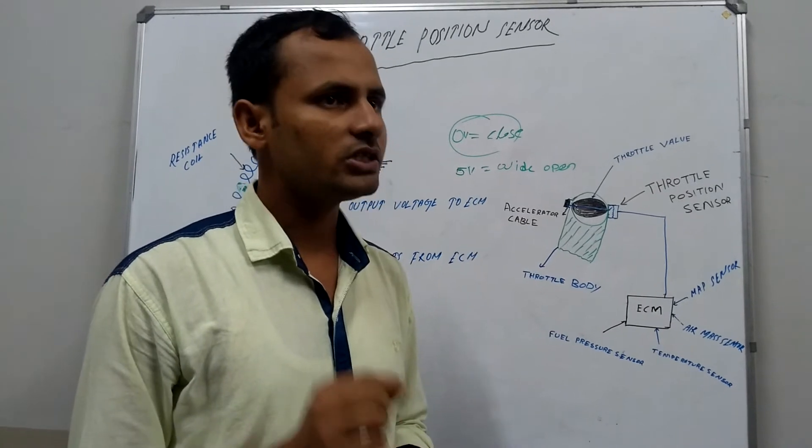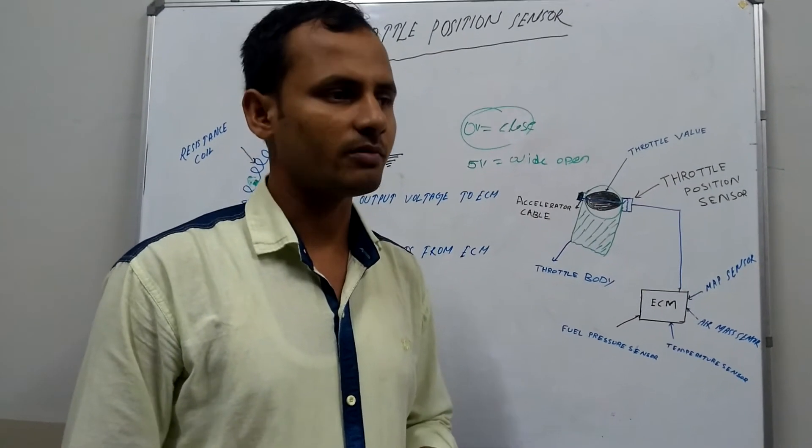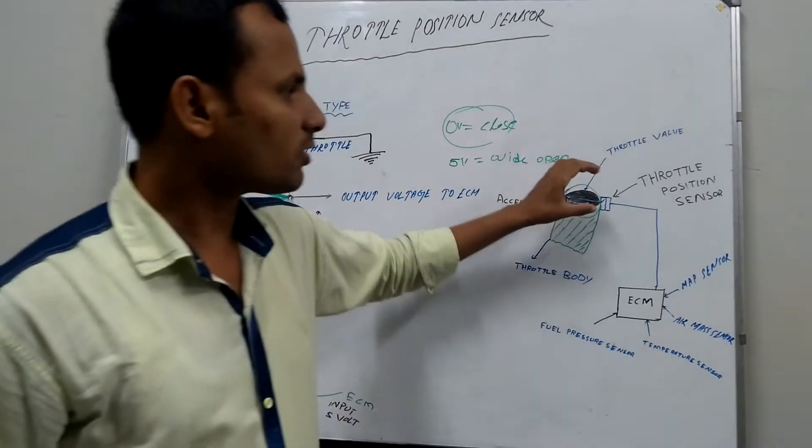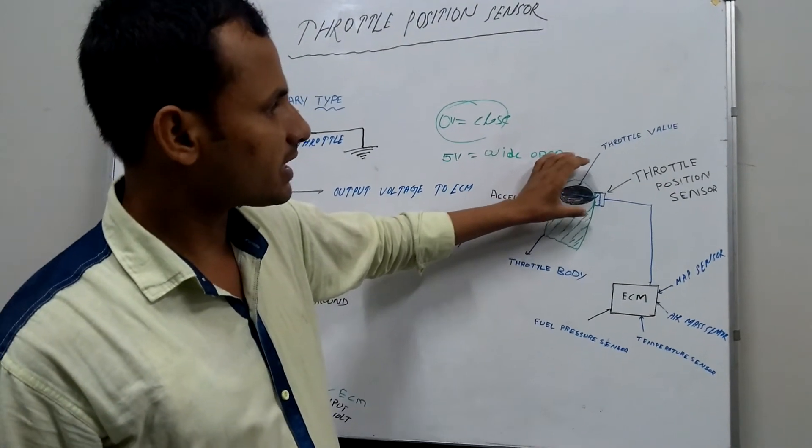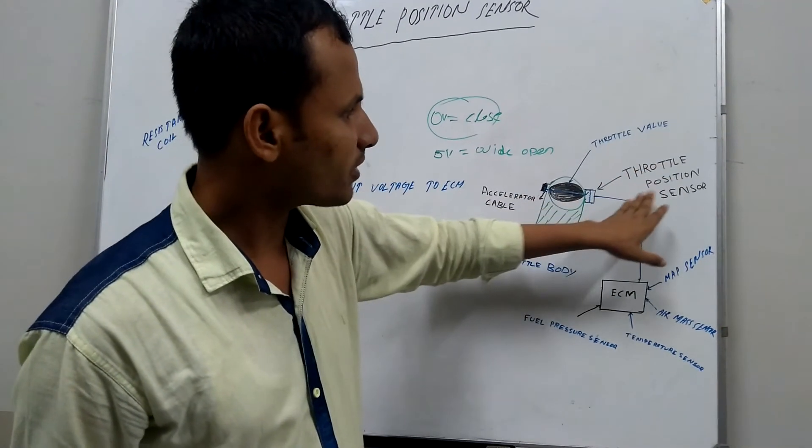So the ECU must know the position of the throttle valve. To know the position of the throttle valve, there is a sensor which is throttle position sensor.